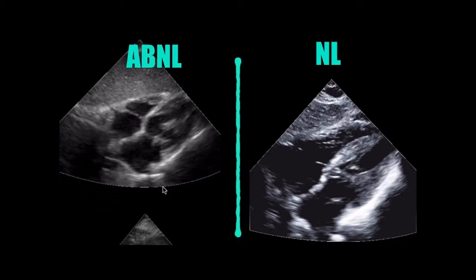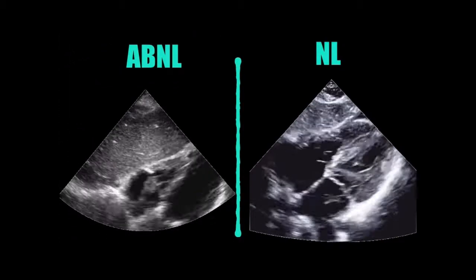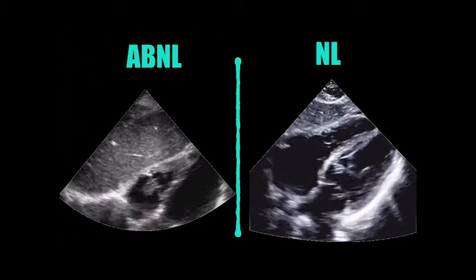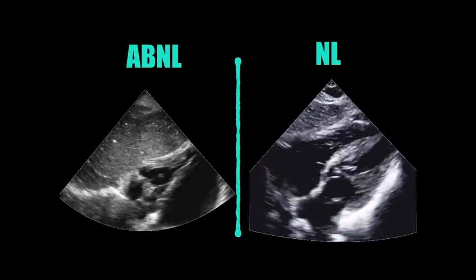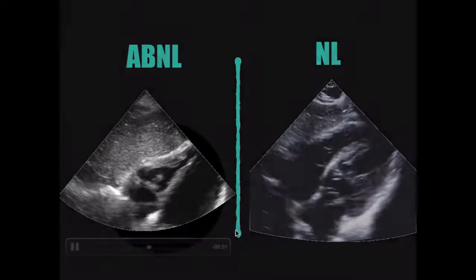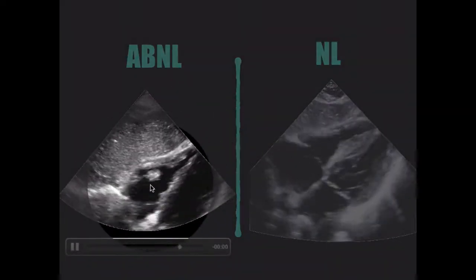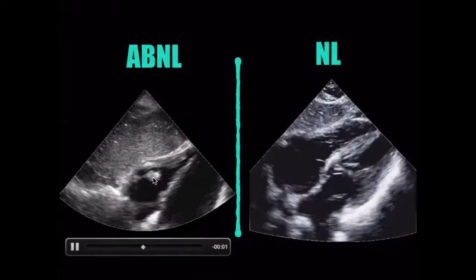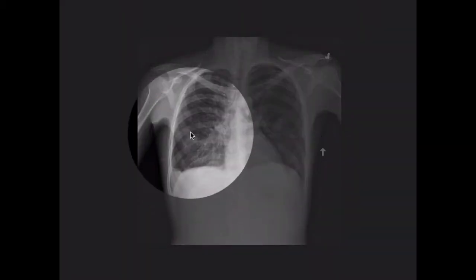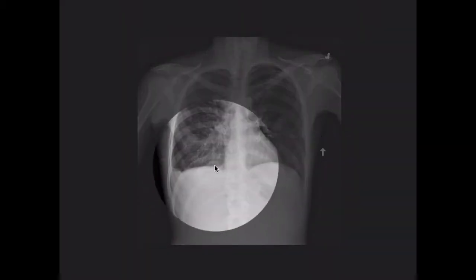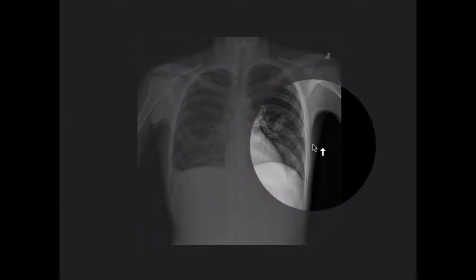There's another sub-xiphoid view. Which valve is it — tricuspid or mitral? Tricuspid, yeah. Right here, that's that little booger on the valve — this is tricuspid endocarditis. You can see those little white spots there, there, there — those are all septic emboli.